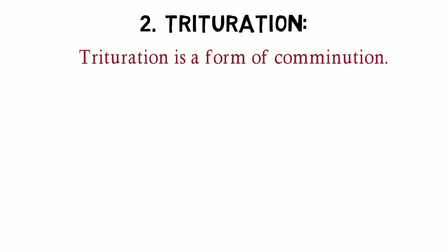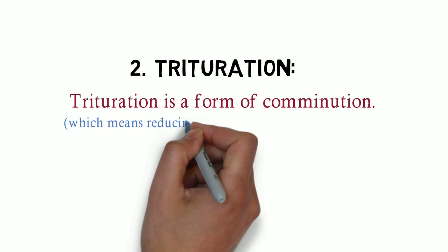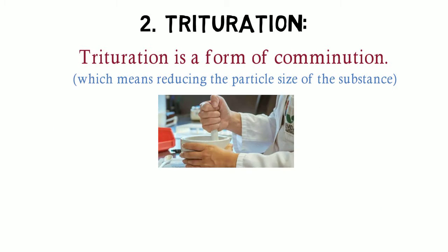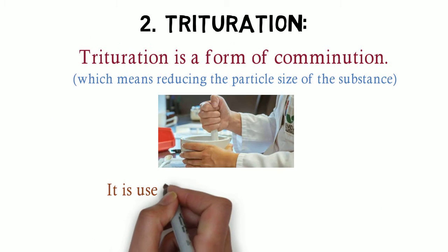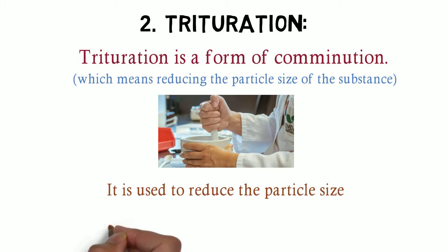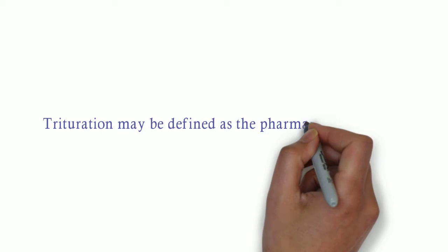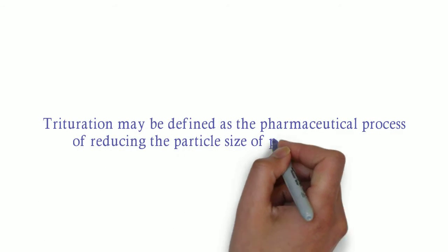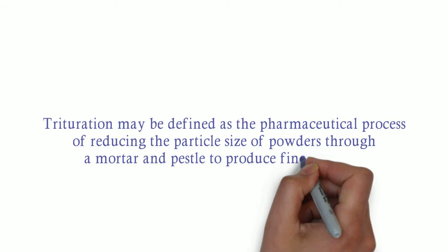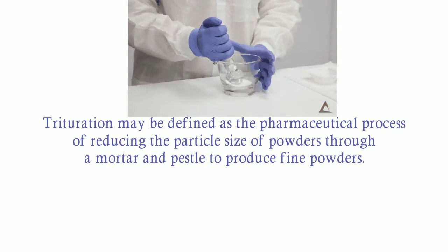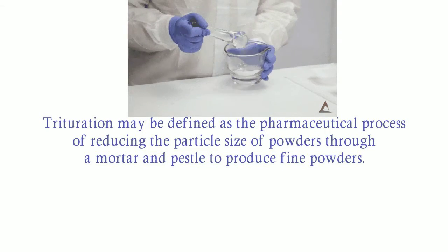Trituration is a form of comminution, which means reducing the particle size of the substance. It is used to reduce the particle size and also aids in mixing of powders. Trituration may be defined as the pharmaceutical process of reducing the particle size of powders through a mortar and pestle to produce fine powders.